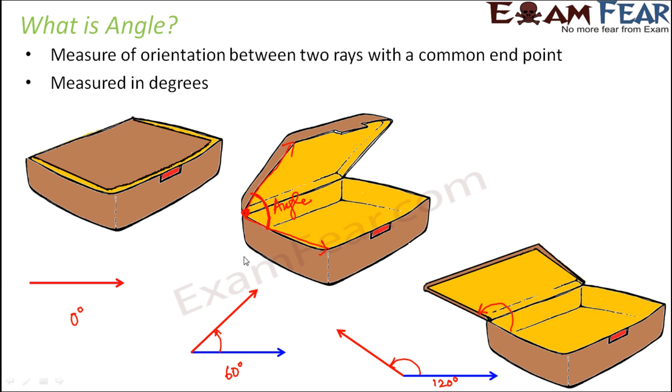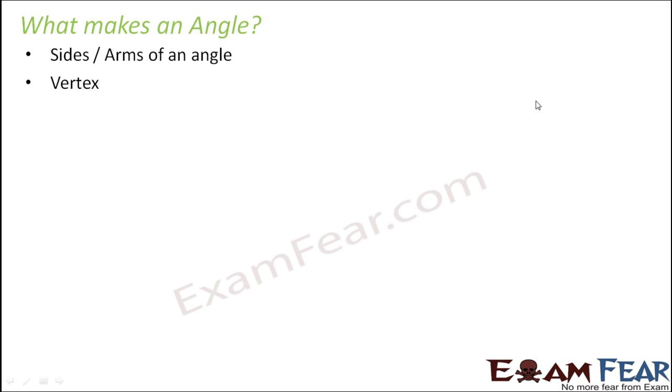This is how we represent angle in a diagram. It is represented by two rays such that they have a common end point. Only if they have a common end point can they form an angle. When you talk about the parts of an angle, an angle consists of the sides or arms of the angle - this is one arm and this is another arm. And this common point is called the vertex.